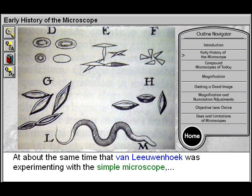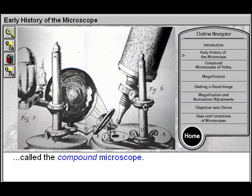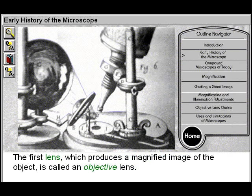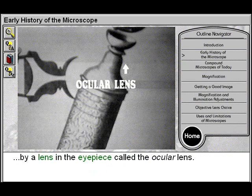At about the same time that van Leeuwenhoek was experimenting with the simple microscope, an Englishman named Robert Hooke was developing a microscope with two sets of lenses, called the compound microscope. The first lens, which produces a magnified image of the object, is called an objective lens. In a compound microscope like Hooke's, the first image is then magnified a second time.